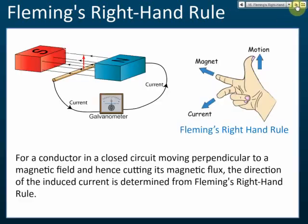So we developed Fleming's right-hand rule. According to Fleming's right-hand rule, with your right hand: the thumb represents the direction of motion, the index finger represents the direction of the magnetic field, and the middle finger represents the direction of the current.